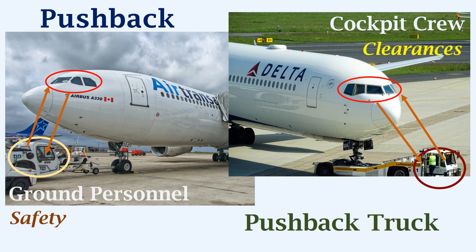Ground personnel should avoid collisions with other vehicles or other aircraft. Before pushback, two-way communication has to be established between the cockpit crew and the ground personnel to inform of any emergencies which require the pushback to be stopped. During pushback, one of the aircraft engines may also be started after getting the required clearances.